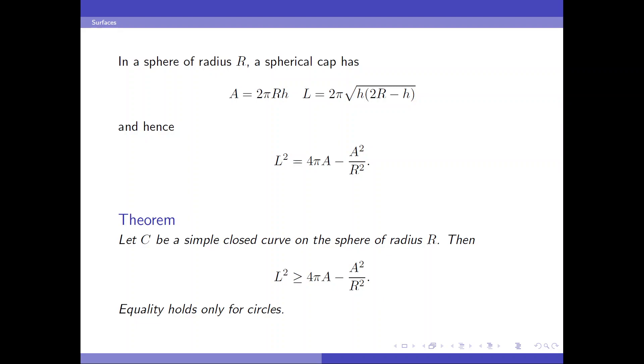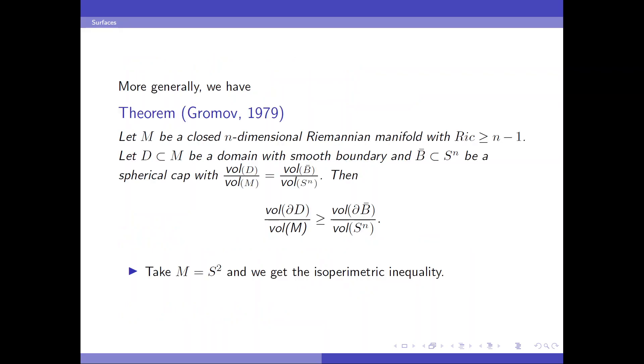And actually, on a sphere, we have the following isoperimetric inequality. Indeed, L squared, for any simple closed curve, its length square is greater than 4 pi times the enclosed area, with the same deficit. And the inequality holds only for circles.